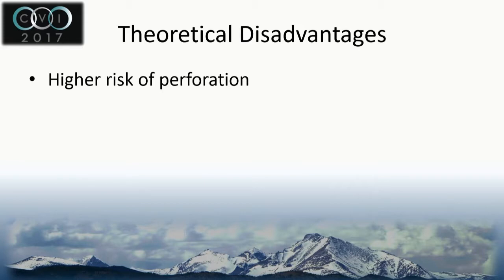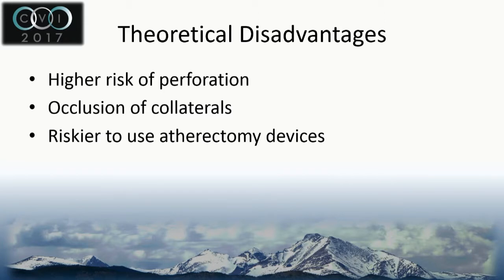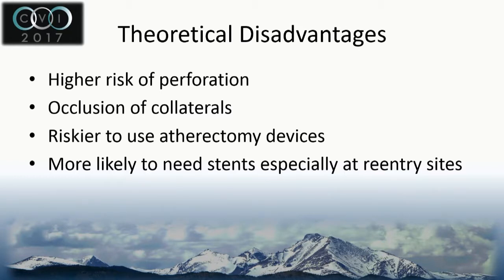Theoretical disadvantages include higher risk of perforation depending on how far subintimal or intermedial you are, possible occlusion of collaterals, and potentially riskier use of atherectomy devices. Personally, if I'm subintimal I would still use an atherectomy device if I think it's appropriate. I'm using less atherectomy now than five years ago because we have DCBs and DES, but directional atherectomy is still fairly safe if you are subintimal — most of the time you can tell which side you're subintimal, so you cut away from the side closer to the outside.